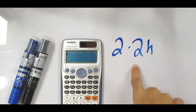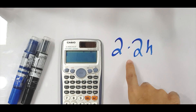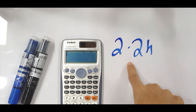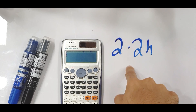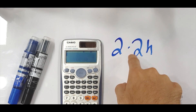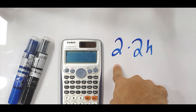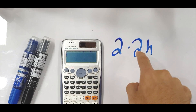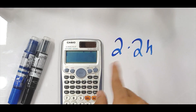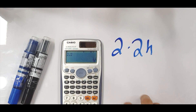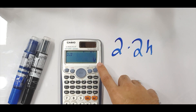Feature number one: we're going to figure out how we can perform time calculations and conversions on the calculator. I've written 2.2 hours and I want to figure out how much that is in hours and minutes. I can see it's going to be two hours and something, but I need to know the exact number of minutes. So I'm going to punch in 2.2 and press the equals sign.